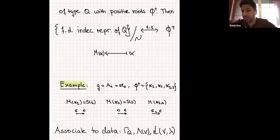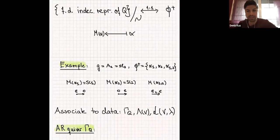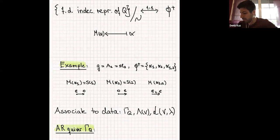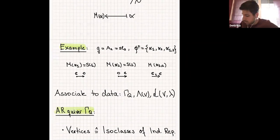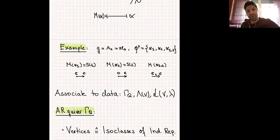So let me tell you what the Auslander-Reiten quiver is. It's again a quiver — you have vertices and arrows between these vertices. But now the vertices are given by the isoclasses of indecomposable representations. You have one vertex for each isoclass of indecomposable representation. Due to Gabriel, the indecomposable representations are given by positive roots. So the Auslander-Reiten quiver has as many vertices as the number of positive roots.